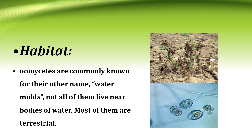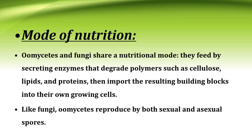Habitat: Oomycetes are commonly known as water molds, though not all of them live near bodies of water — most of them are terrestrial. Mode of nutrition: Oomycetes and fungi share a nutritional mode. They feed by secreting enzymes that degrade polymers such as cellulose, lipids, and proteins, then import the resulting building blocks into their own growing cells. Like fungi, Oomycetes reproduce by both sexual and asexual spores.